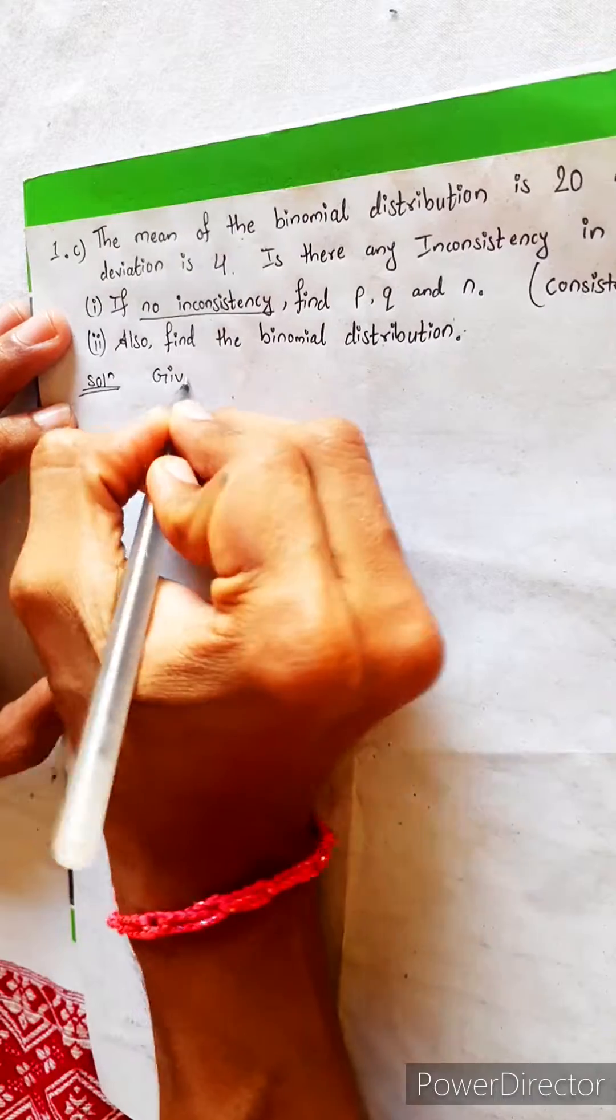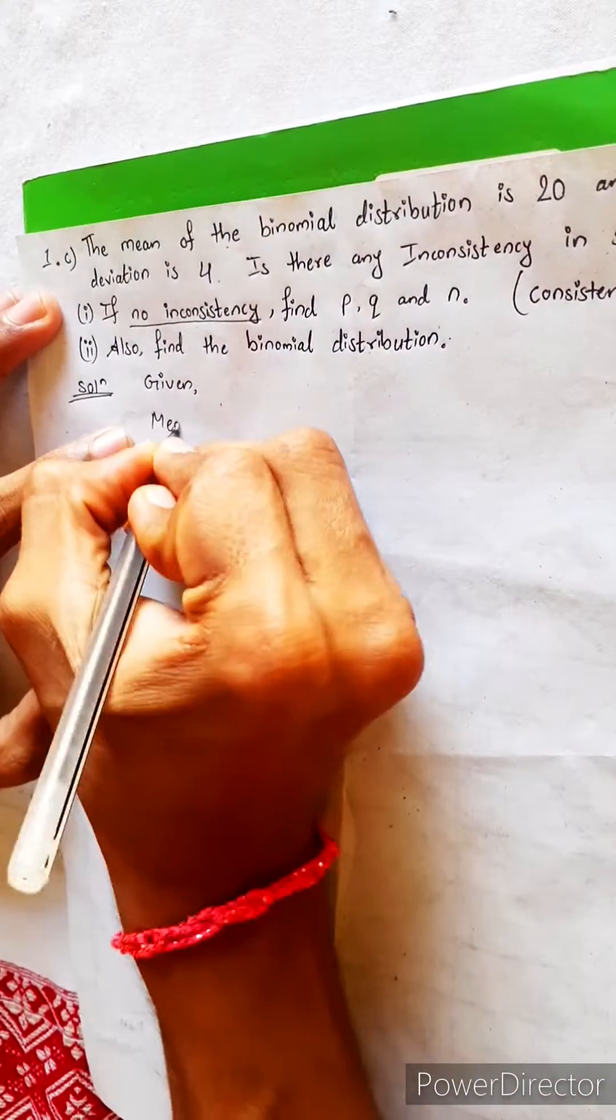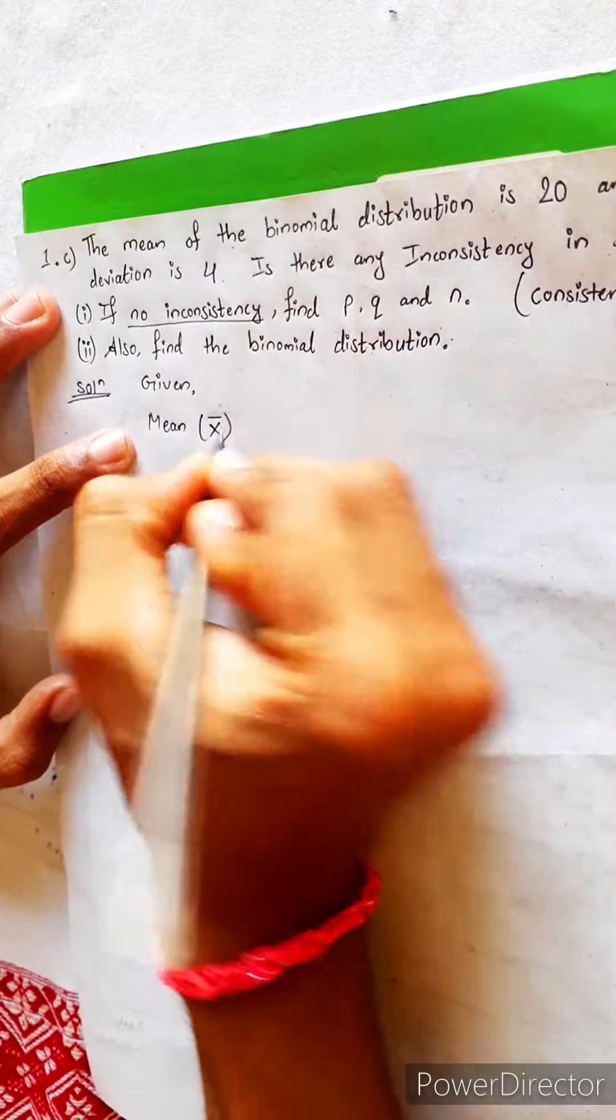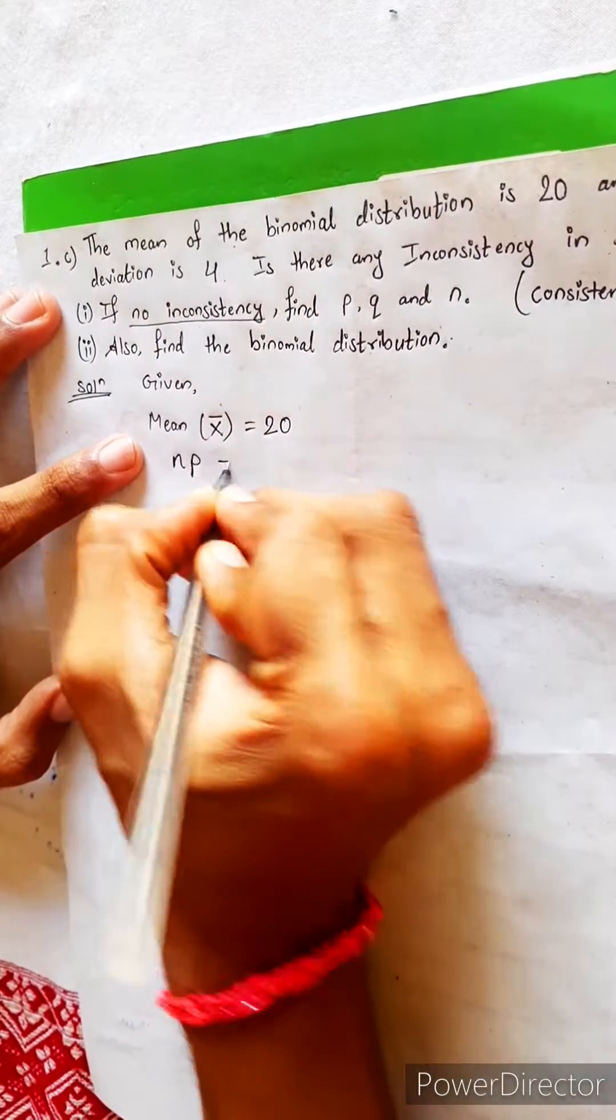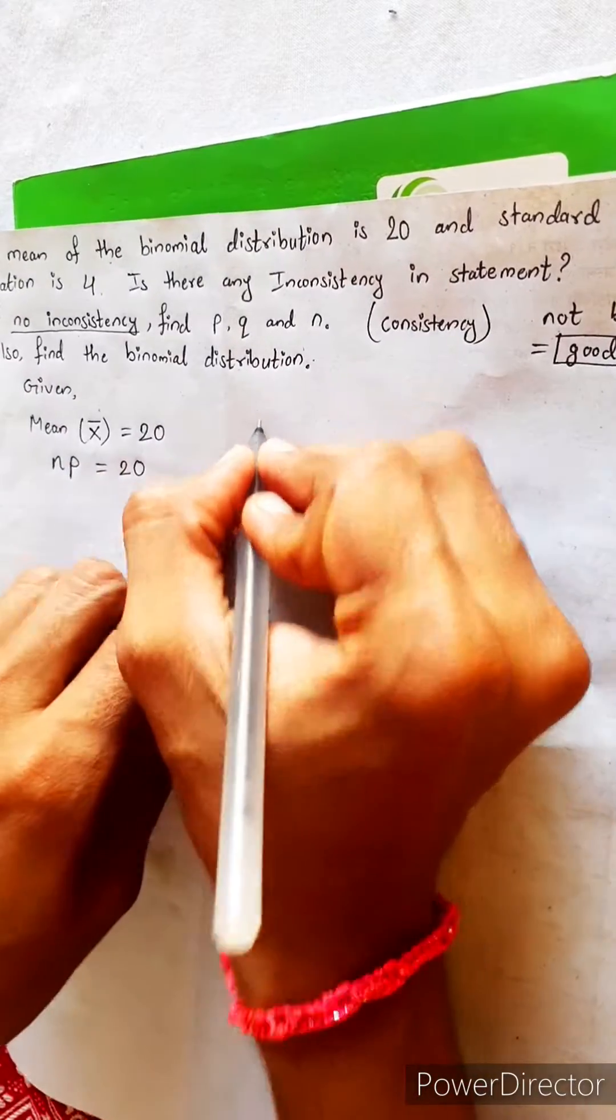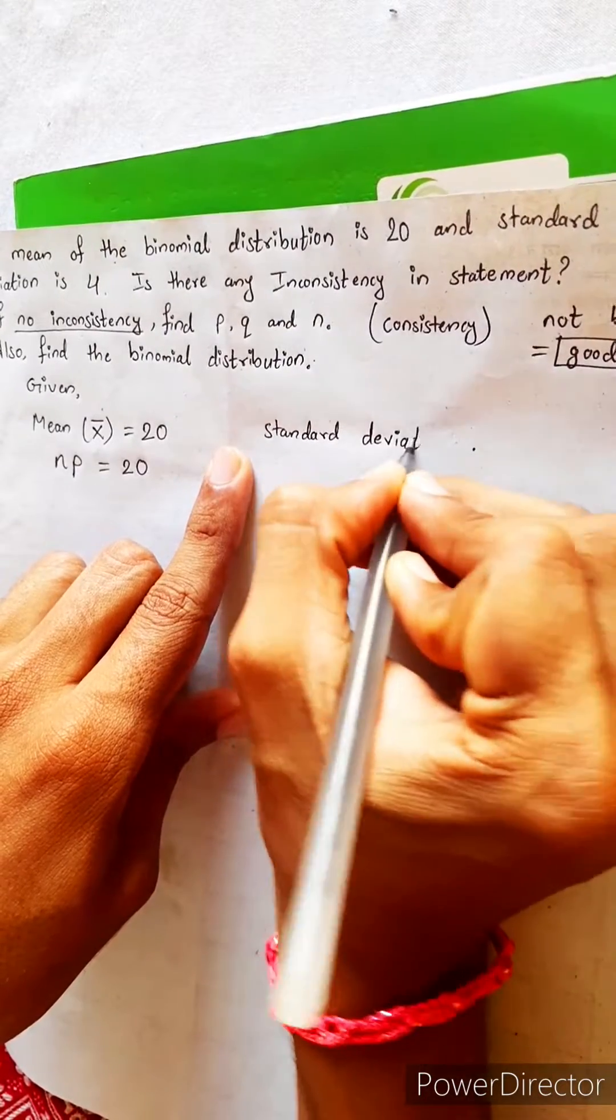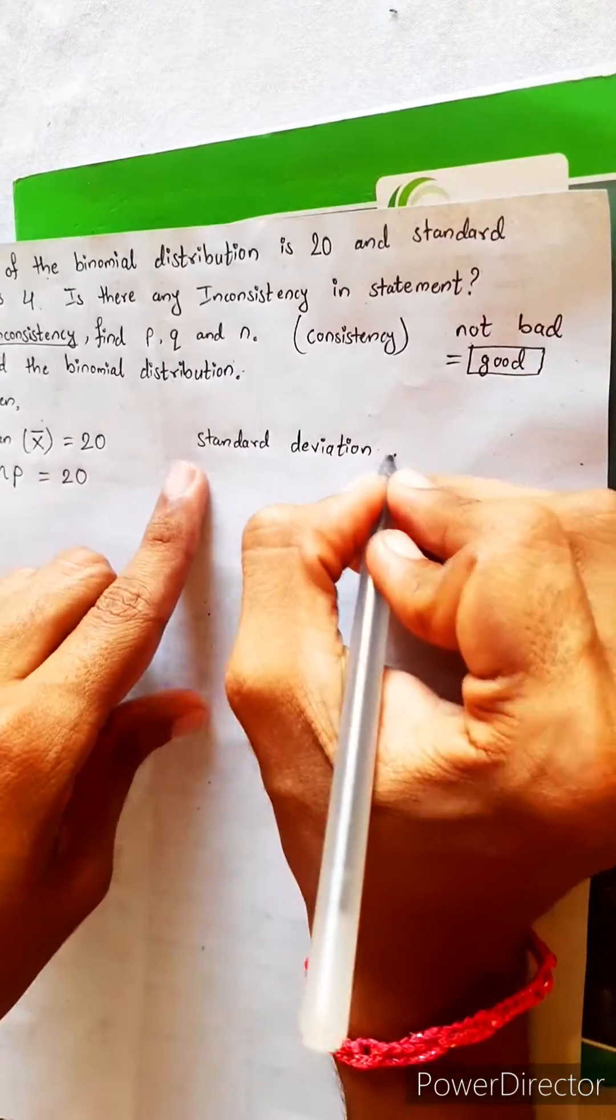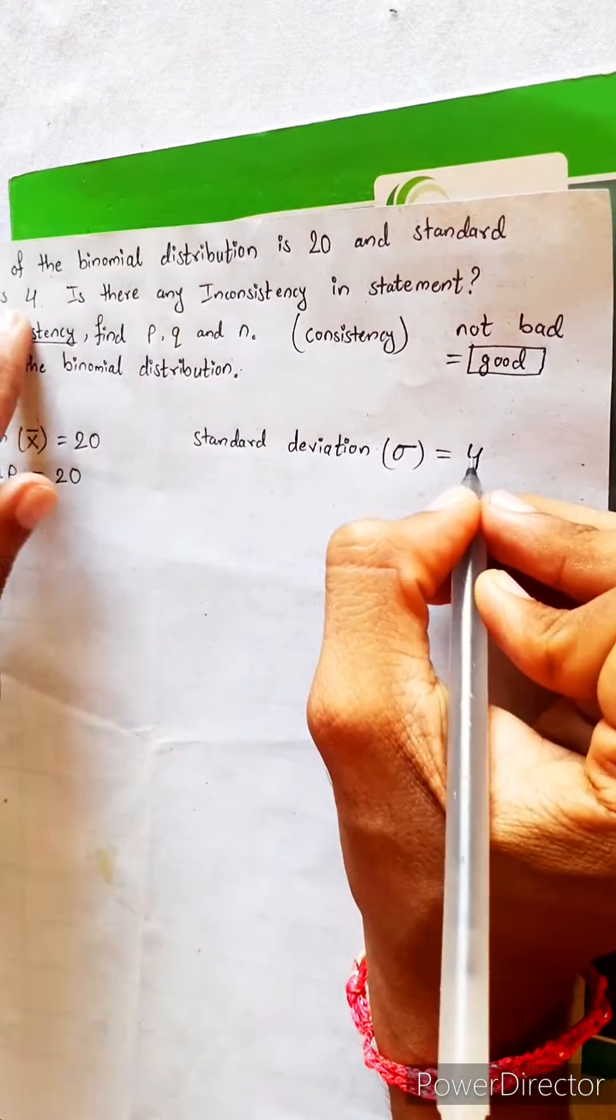Look, what is given? Binomial distribution, mean is given. Mean of binomial distribution X bar equals to 20. We know the formula of mean. NP equals to 20. And standard deviation is also given. Let's write here. Standard deviation. Standard deviation formula is this. Symbol is sigma equals to 4 is given.